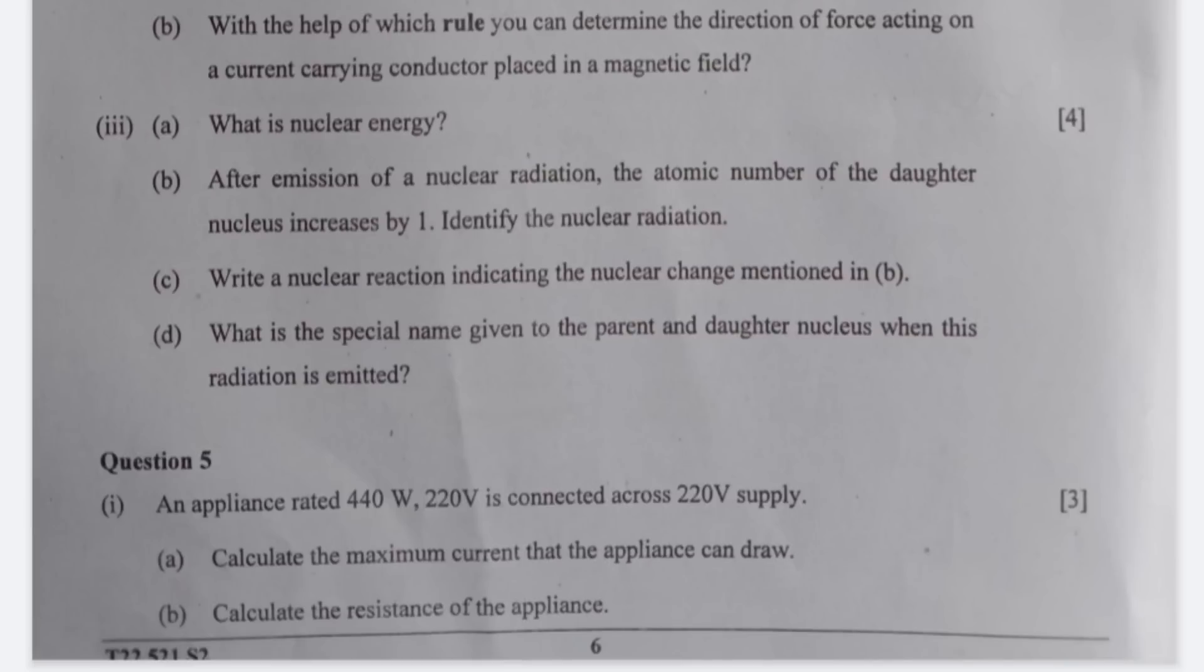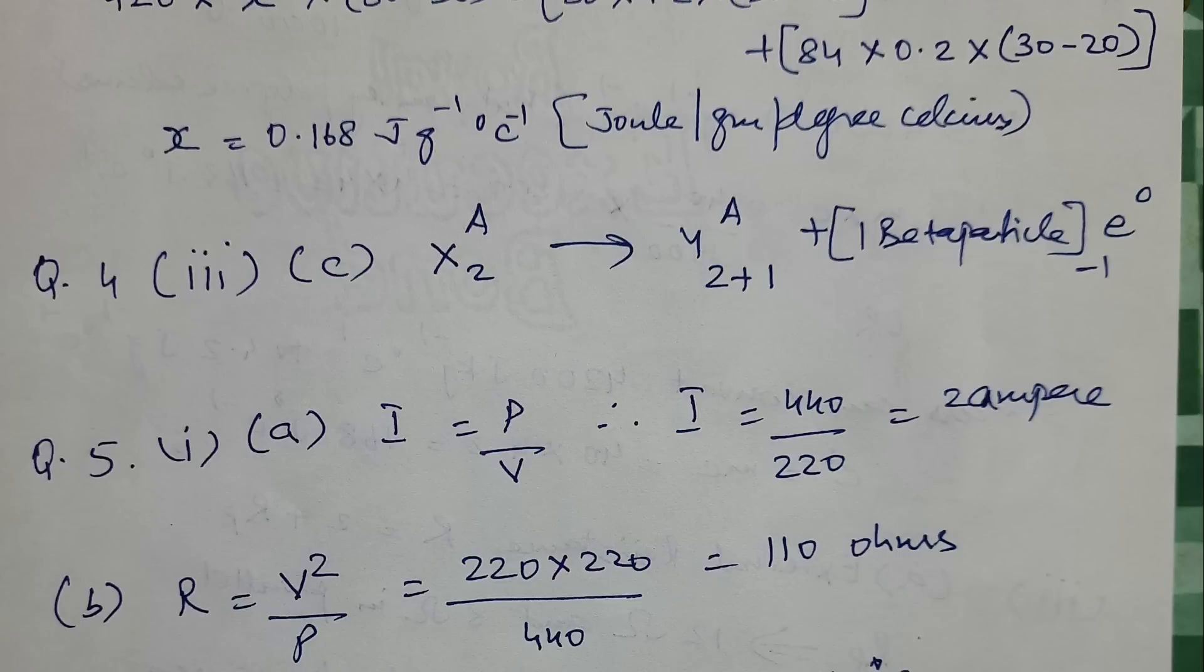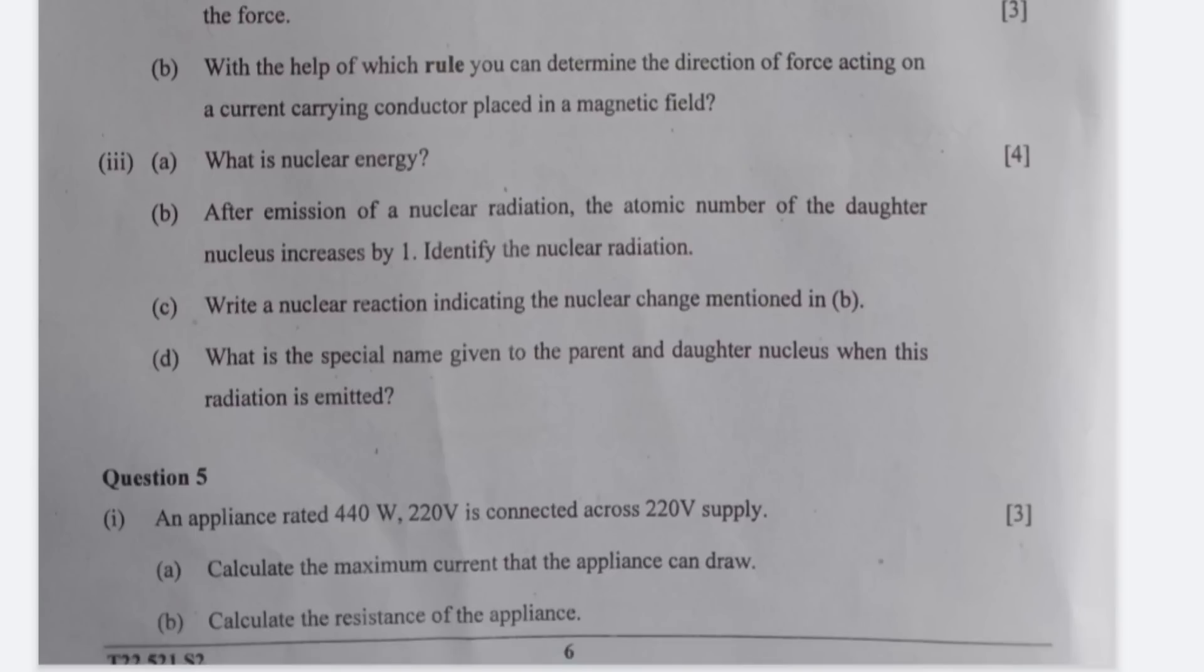The next one is beta radiation B. Then C, this is the way you need to write this. D will be isobar. What is the special name given to the parent and daughter nucleus when this radiation is emitted? That will be isobar.